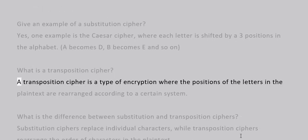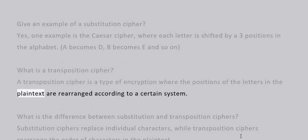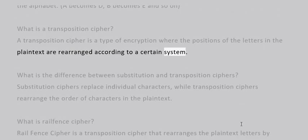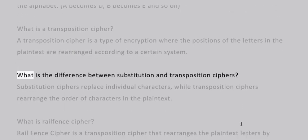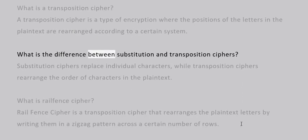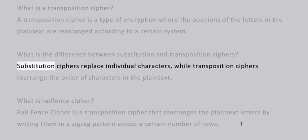What is a transposition cipher? A transposition cipher is a type of encryption where the positions of the letters in plain text are rearranged according to a certain system. What is the difference between substitution and transposition ciphers? Substitution ciphers replace individual characters, while transposition ciphers rearrange the order of characters in the plain text.